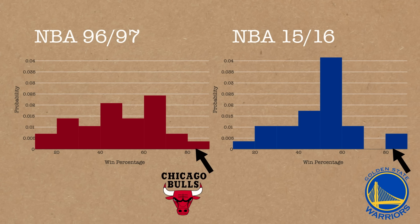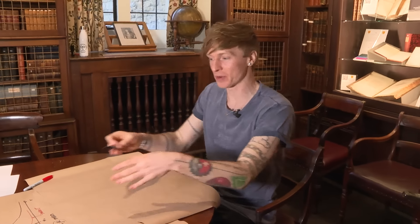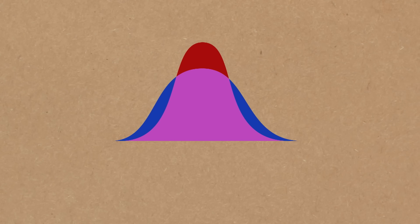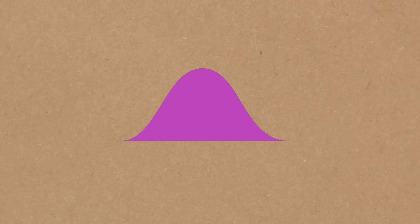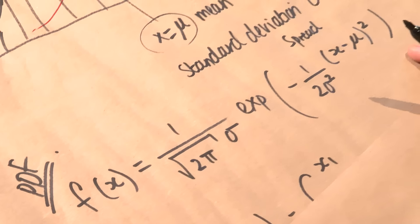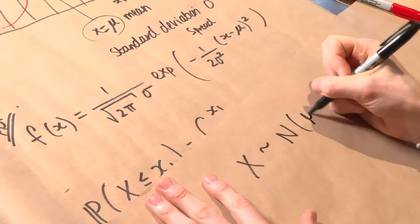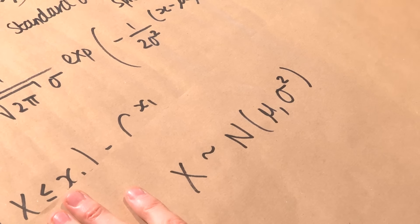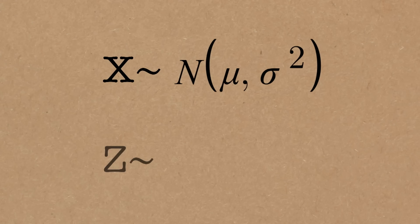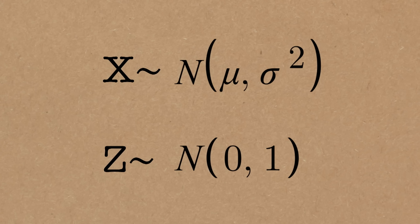What we can do is reduce each of them to what we call the standardized normal distribution, and that allows us to compare what position they are on the standard one. The normal distribution has random variable x normally distributed with mean mu and variance sigma squared. Now the standard normal — often referred to as z, which is where the z-factor comes from — is a normal distribution with mean zero and standard deviation one.